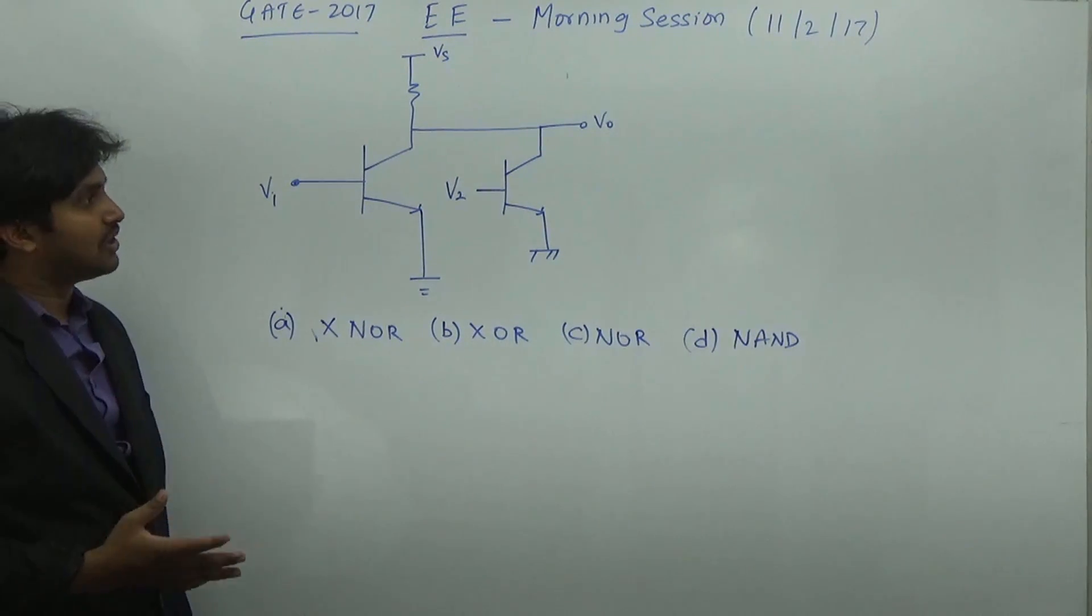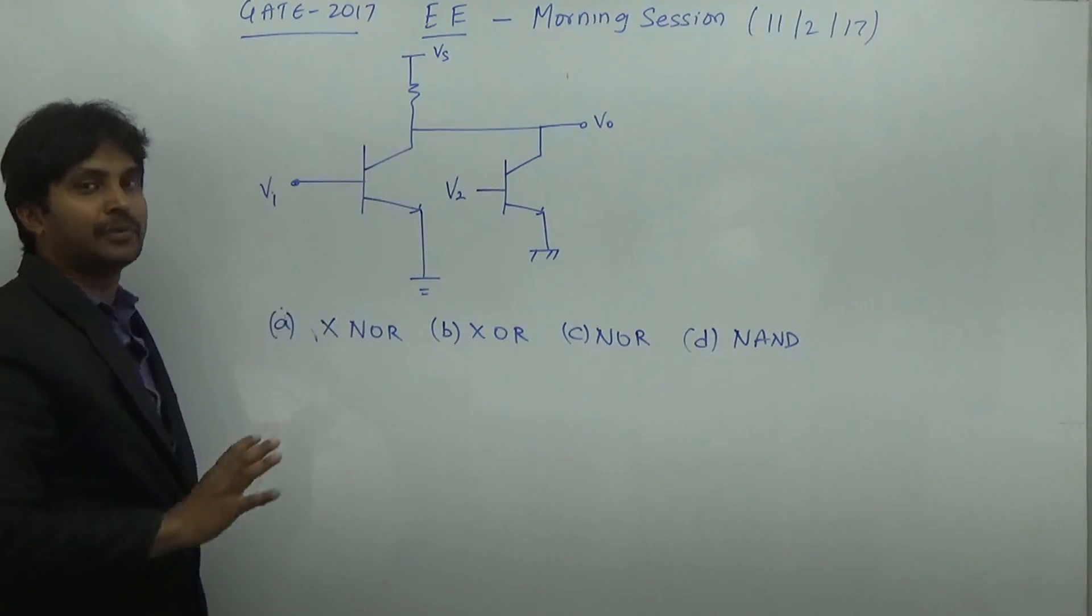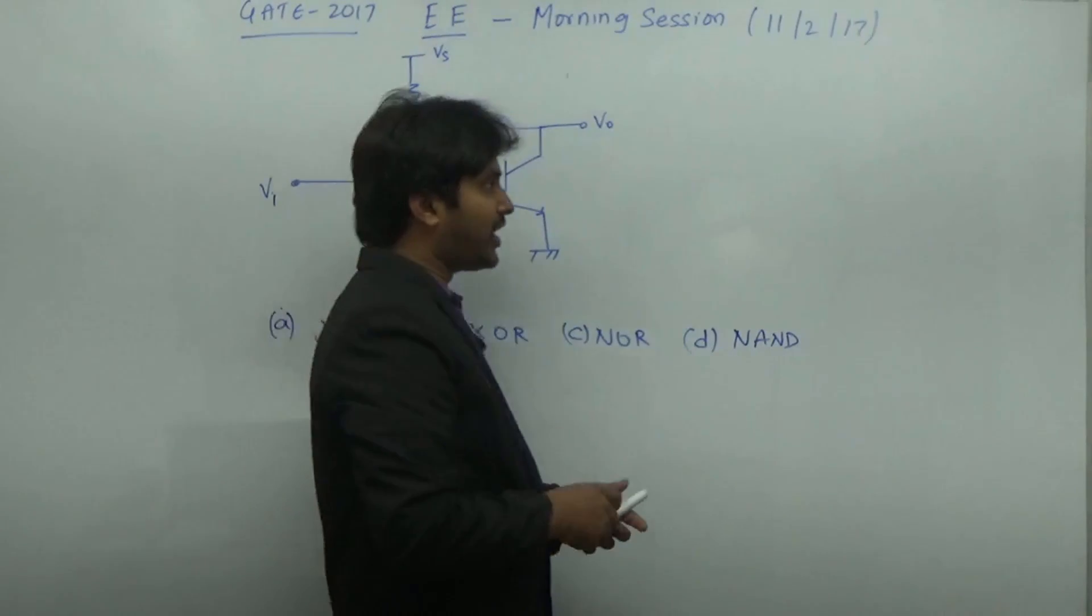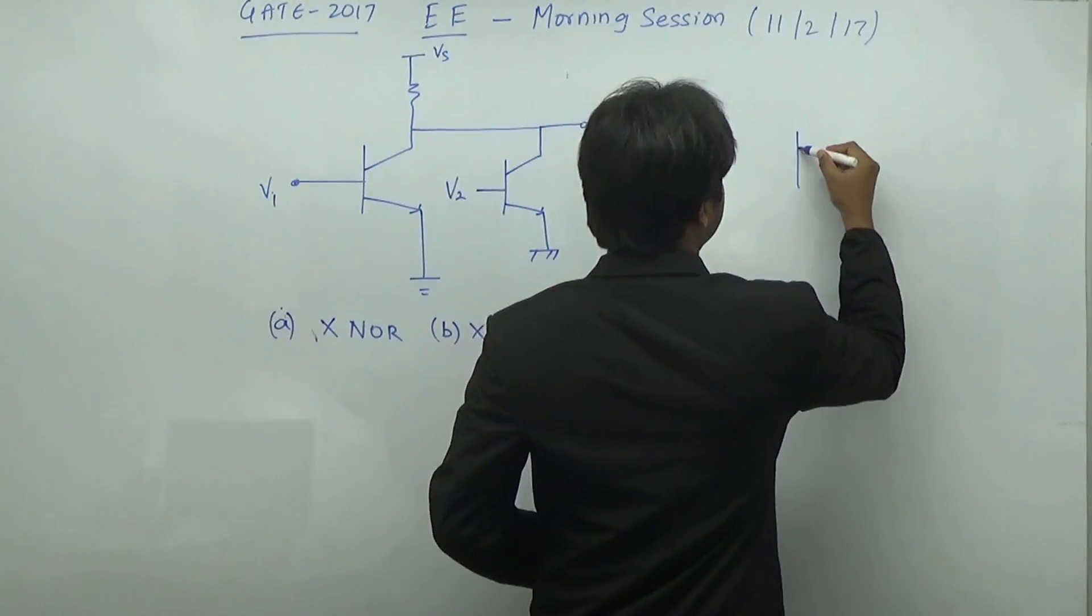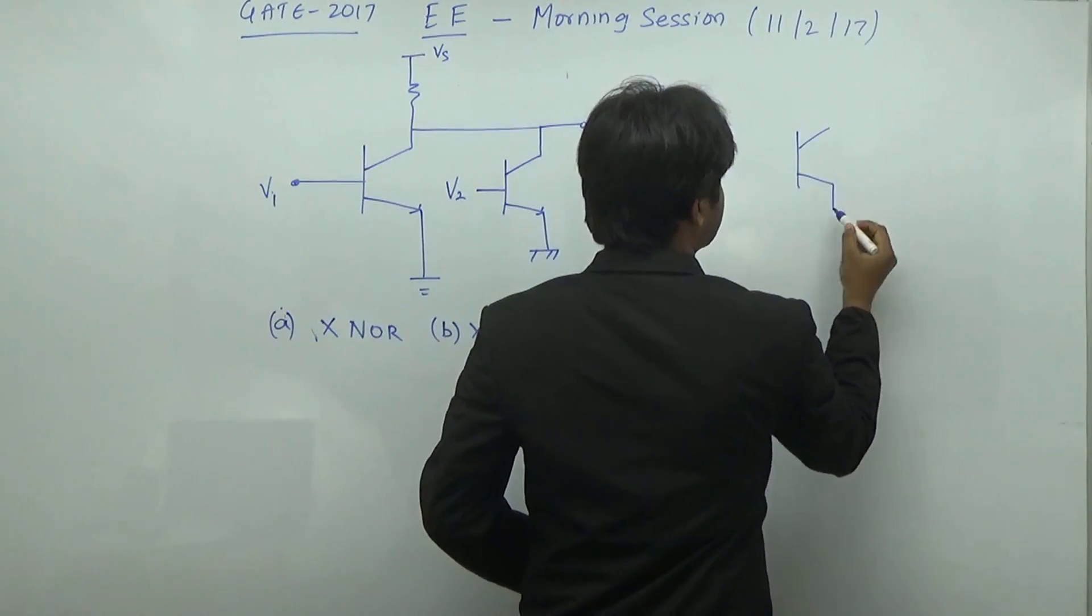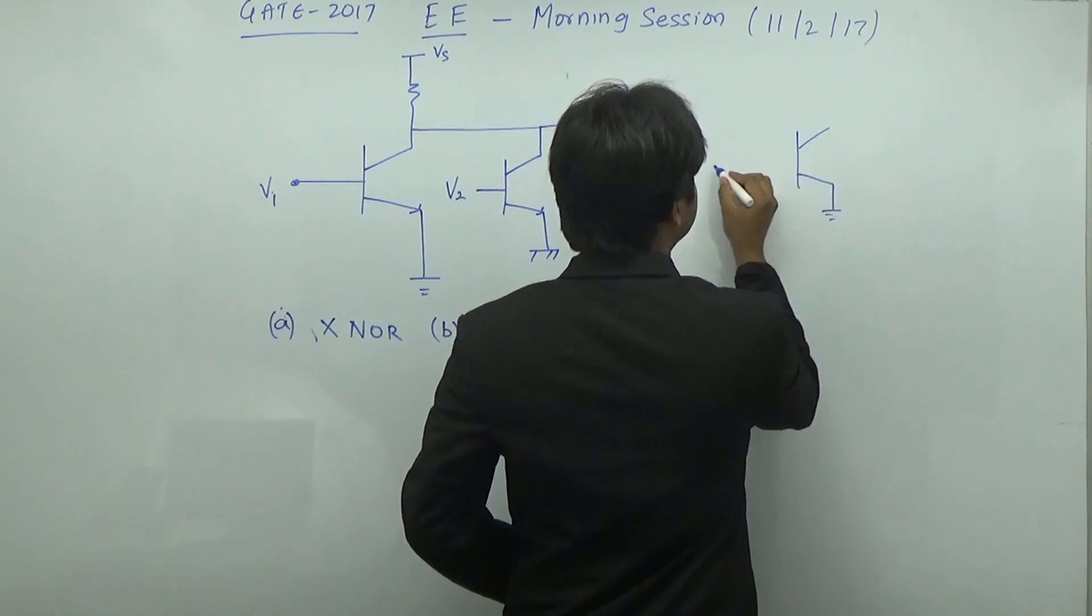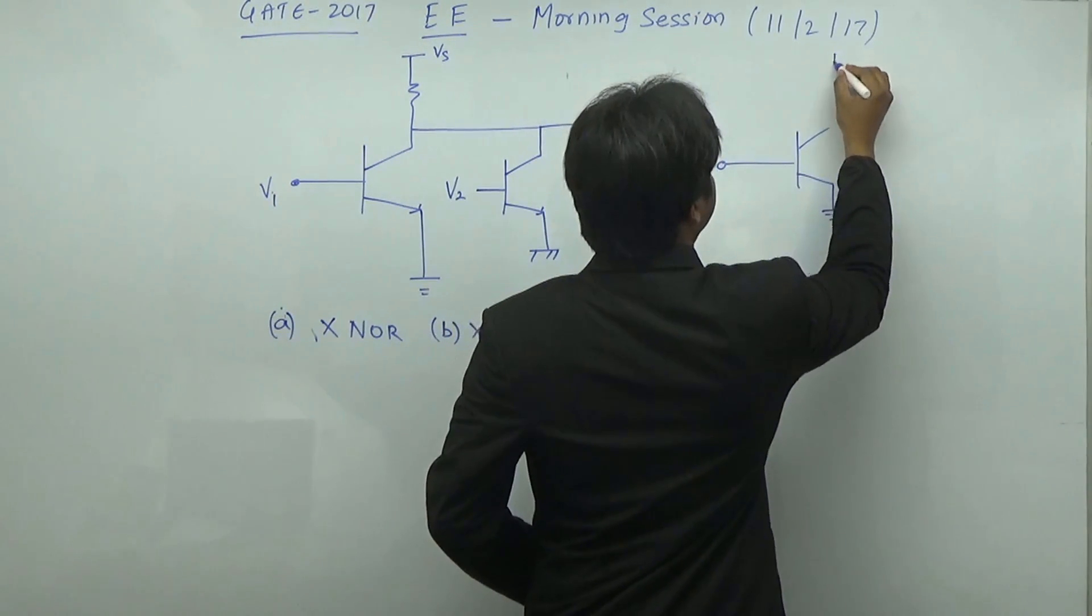This question can be solved by simply knowing the characteristic of a particular BJT. If you have a BJT, the BJT is going to work like a NOR gate.